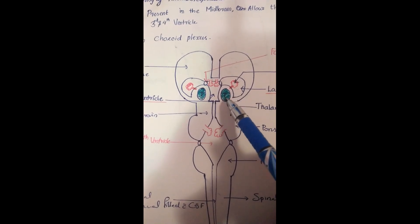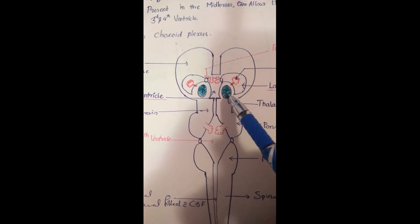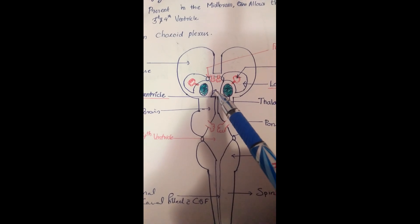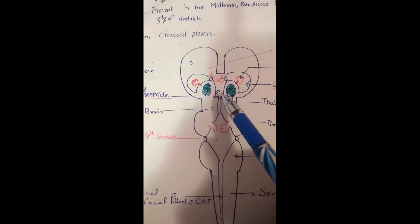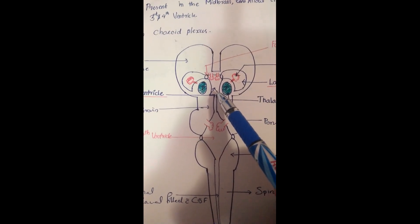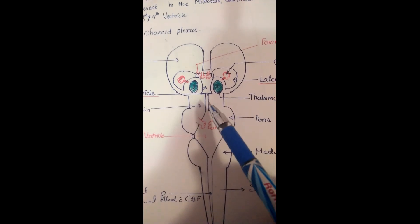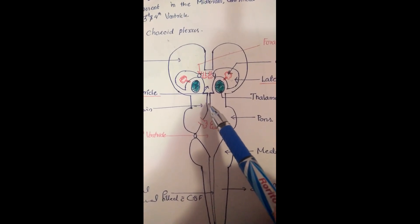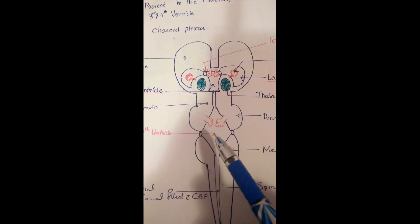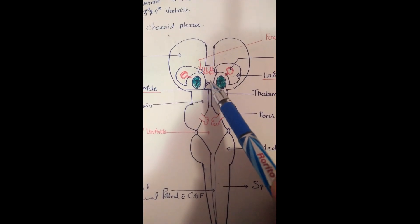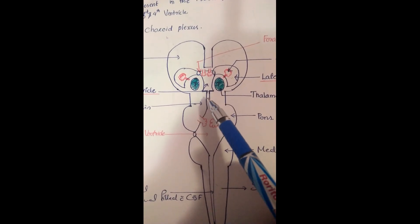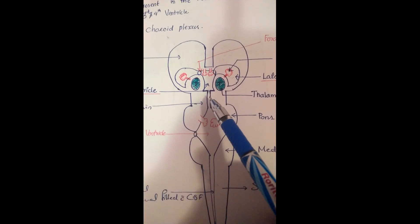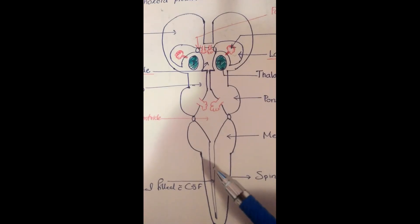Lateral to the thalamus is the lateral ventricle. The cavity present between the thalamus is known as the third ventricle. This tube which connects the fourth ventricle and third ventricle is known as the cerebral aqueduct.